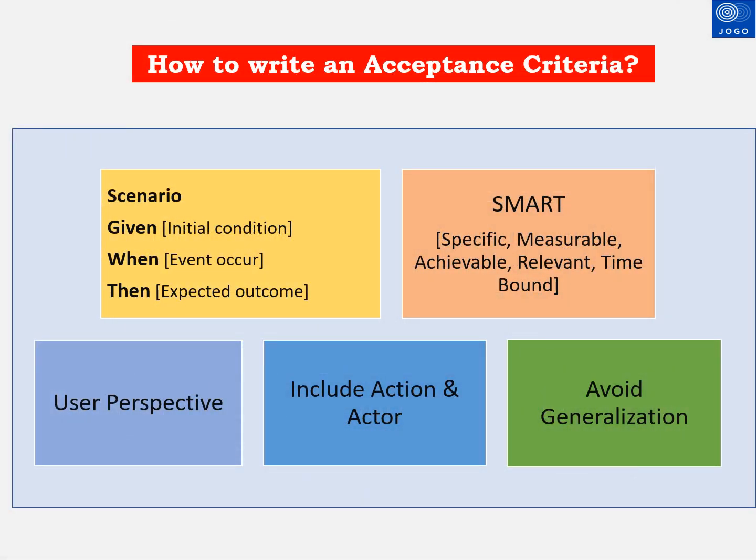Now let us see how to write acceptance criteria and what key information we should consider. User scenario along with given, when, then conditions and outcomes are needed to write good acceptance criteria. The scenario covers the user type and the need for the user. 'Given' is how things will begin in the product. 'When' is the action taken by the user. 'Then' is the outcome of the action taken by the user.